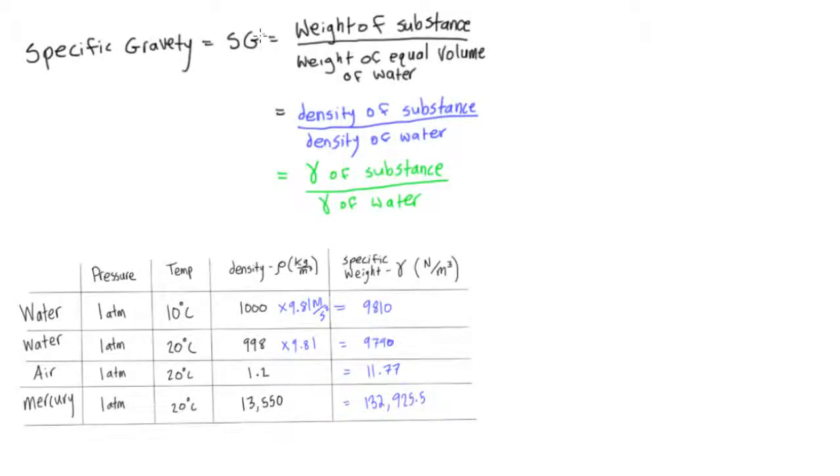All right, now we're looking at specific gravity. This is a dimensionless quantity and you can sort of think of it as a relative density. So look at this blue one here. We say that specific gravity is equal to the density of the substance divided by the density of water. So we're pretty much just comparing how dense it is compared to a known quantity of water.